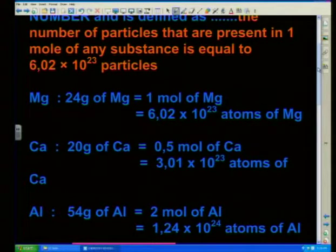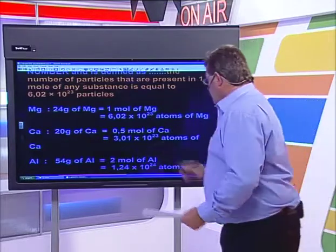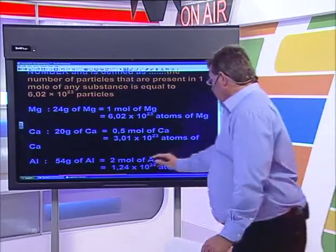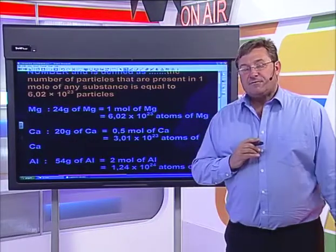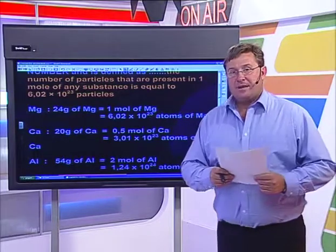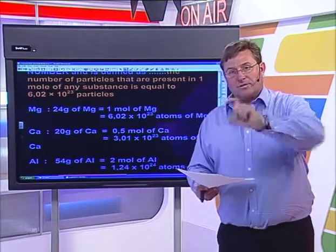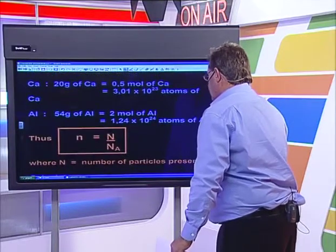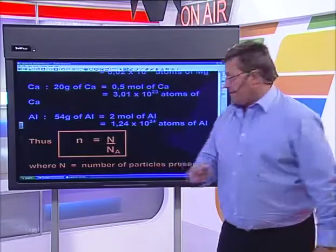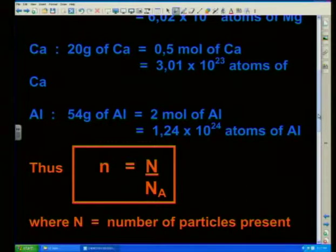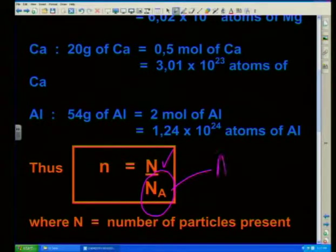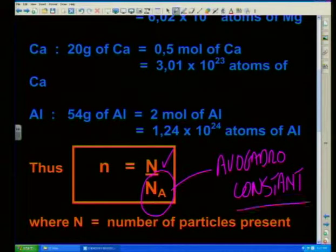Half a mole of calcium gives us half the number of atoms: 3.01 times 10 to the 23 - simply dividing the Avogadro constant by 2. If I have 54 grams of aluminium, we know that's 2 mol of aluminium, so I multiply 6.02 times 10 to the 23 by 2, getting 1.204 times 10 to the 24 atoms of aluminium. This gives us a simple formula: n equals N over NA, where N represents the number of particles present and NA is the abbreviation for the Avogadro constant, N with a little subscript capital A.